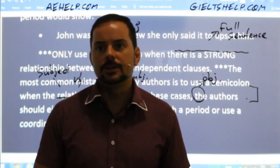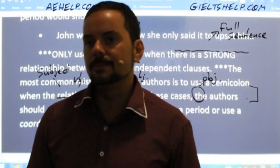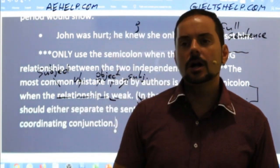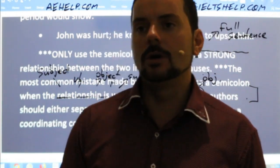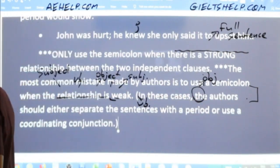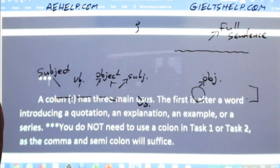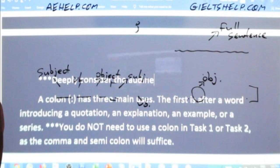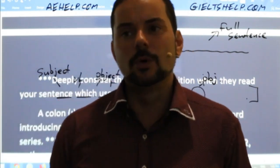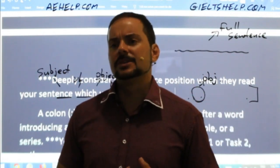Amarjeet says: 'IELTS is mandatory; I want to go to Canada for further study.' Amarjeet, the relationship is not clear there. The reader can't see clearly how wanting to go to Canada connects to IELTS being mandatory. Think about the reader's position — if I'm the audience and I read that sentence, I'm not sure what you're trying to tell me. If the reader isn't sure, the semicolon is not used correctly.